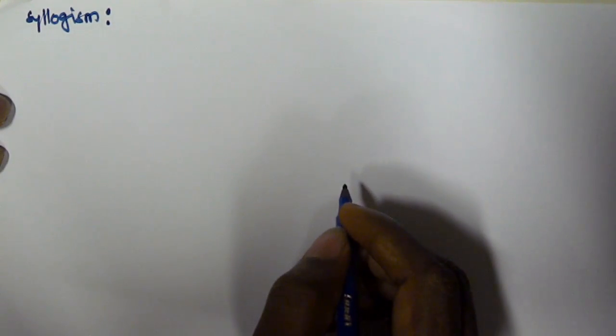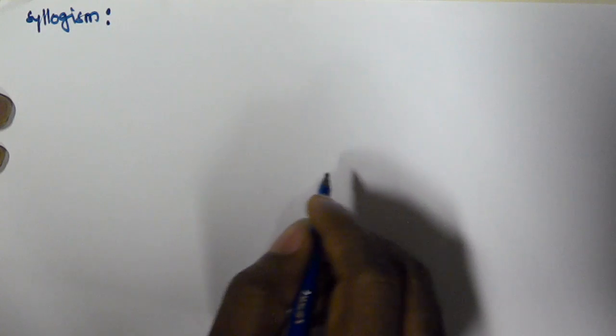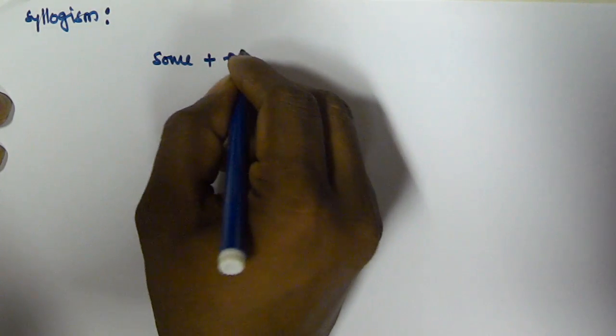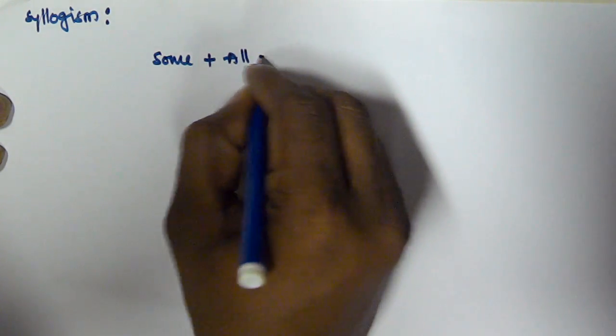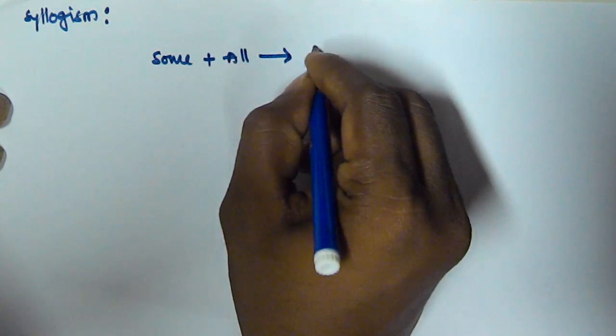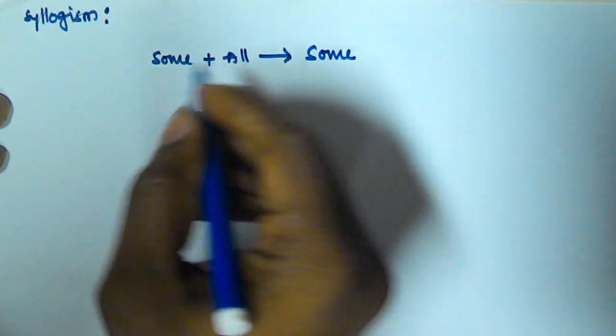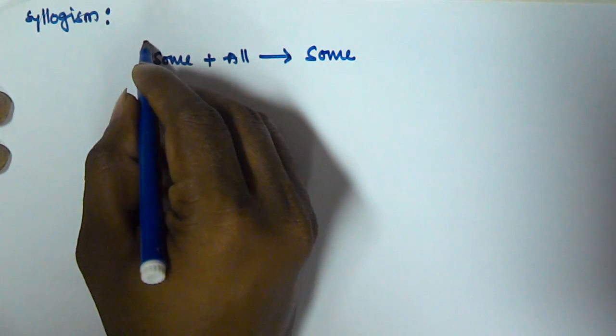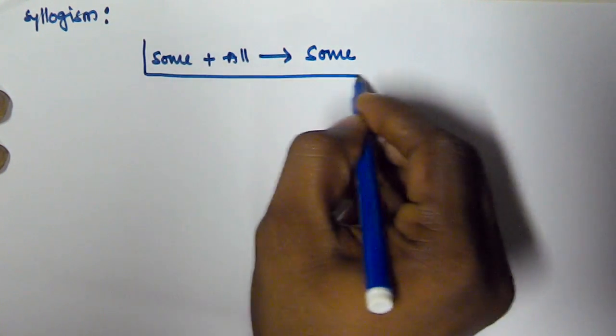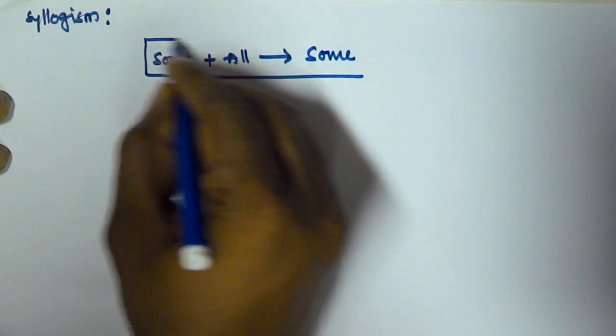Hello friends, in this video we will see another problem based on the syllogism rule. The key rule here is: some plus all gives some — sum plus all equals sum.